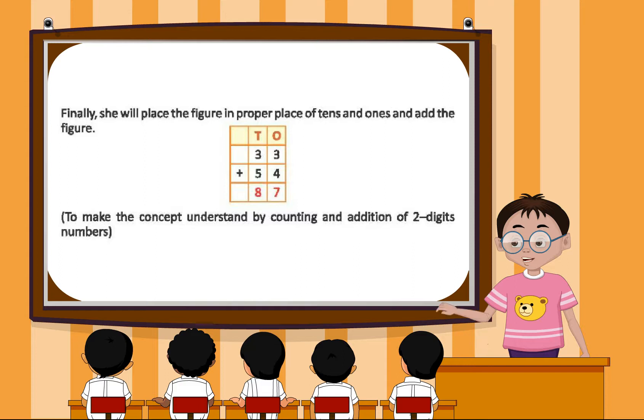Finally, she will place the figures in the proper place of tens and ones and add them. 33 plus 54 equals 87.